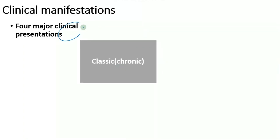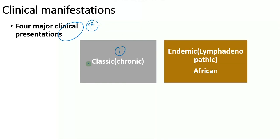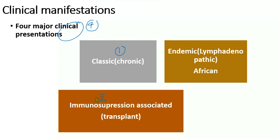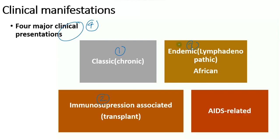In its clinical manifestations, there are four major clinical presentations: the classic, the immunosuppression-associated, the endemic, and the epidemic. Let's look into each one of these one by one.